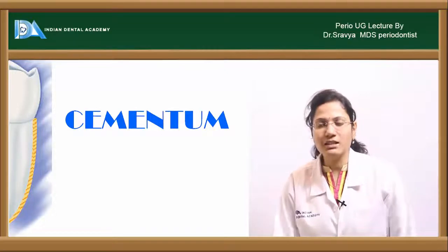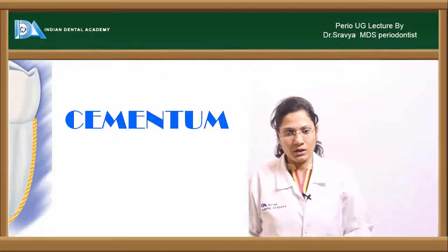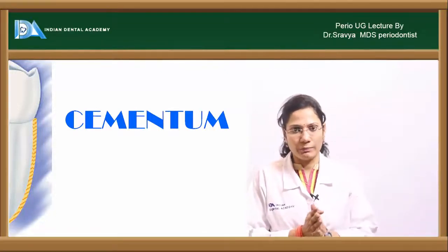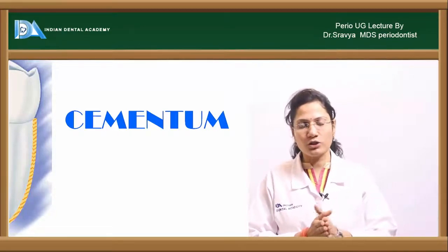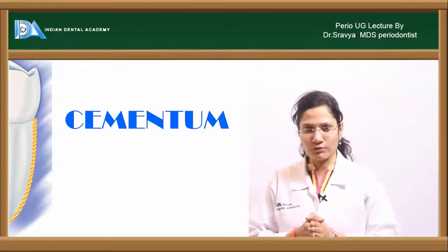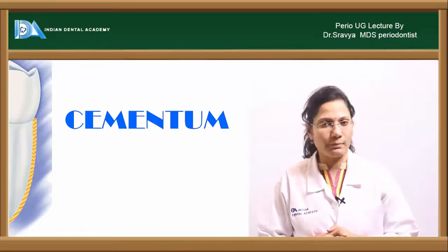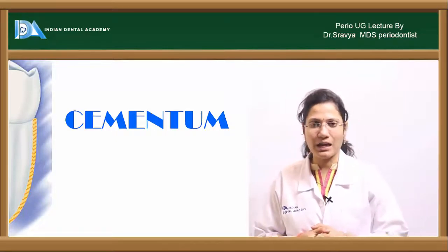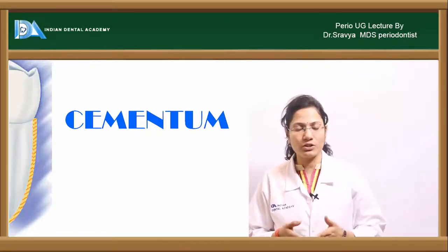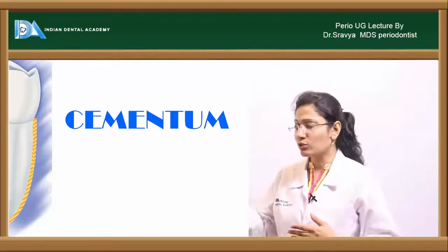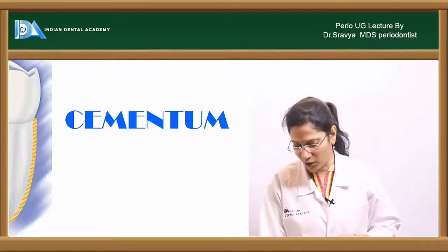Cementum is one of the hard tissues of the periodontium. The periodontium is composed of two hard tissues and two soft tissues. The two soft tissues include the gingiva and the periodontal ligament, and the two hard tissues include the cementum and the alveolar bone.